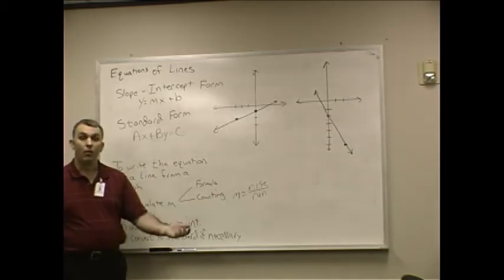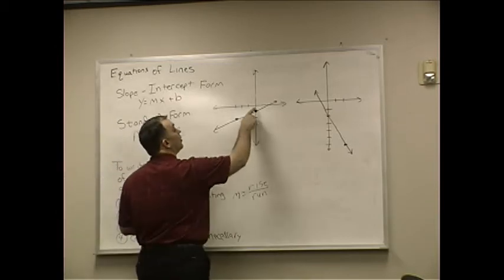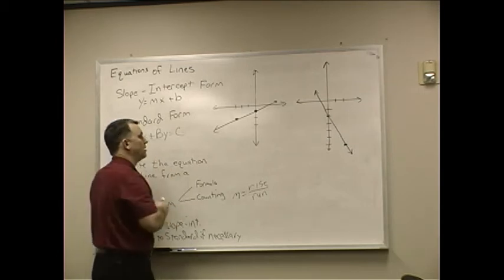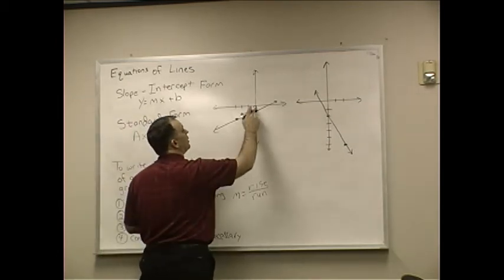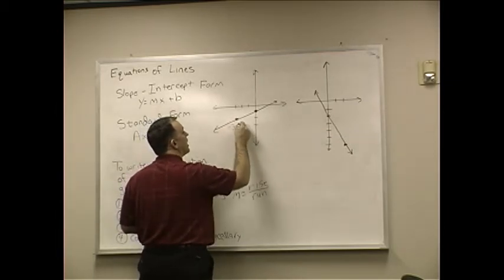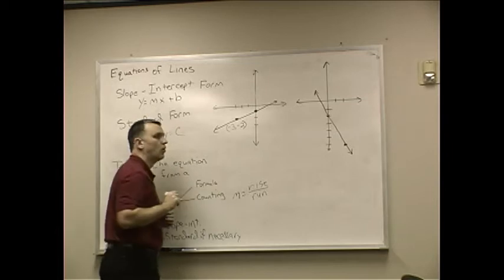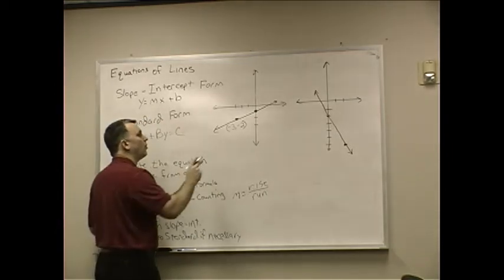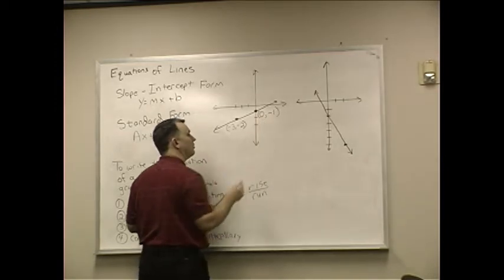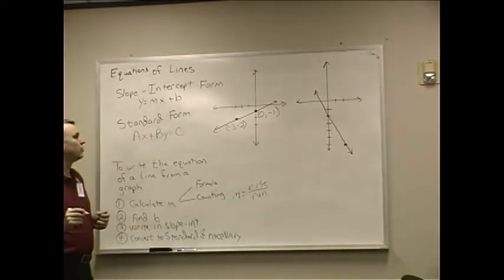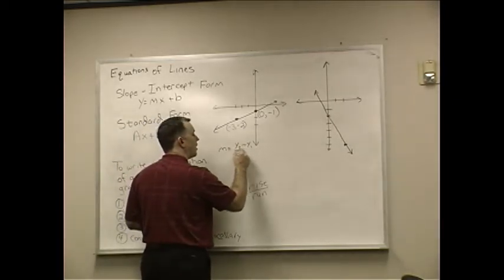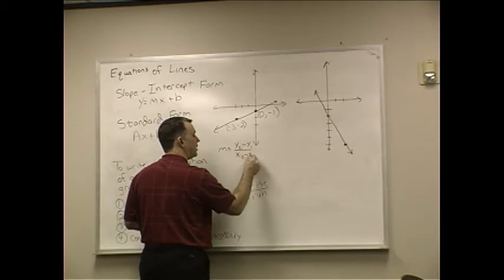If you want to do it with the formula, this first, I always just go with the left-hand point for being the first point. So, the first point here has a value of negative 3 for x and negative 2 for y. The second point has a value of 0 for x and negative 1 for y.